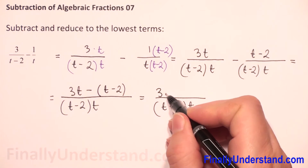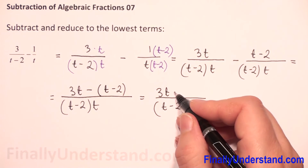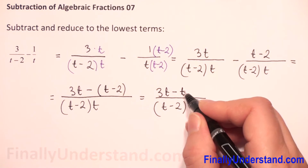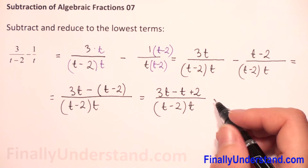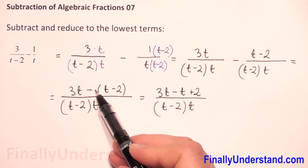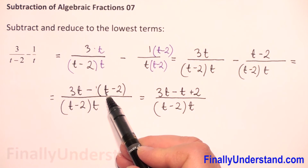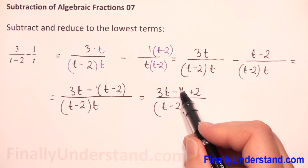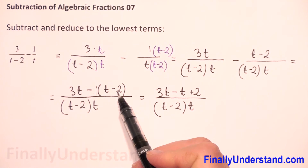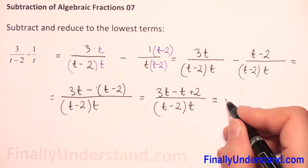Here we have 3t, and then negative and positive gives negative t. This is like multiplication — this is negative 1. Negative 1 times positive t is negative t. I don't have to write the 1. And negative 1 times negative 2 is positive 2.